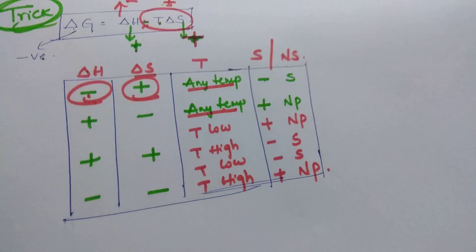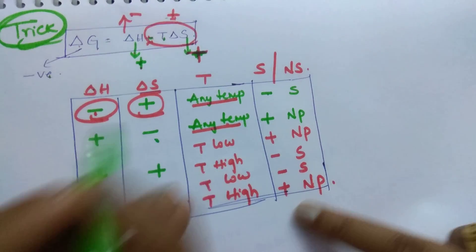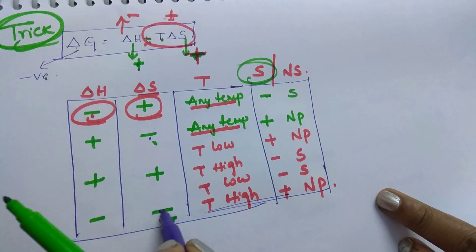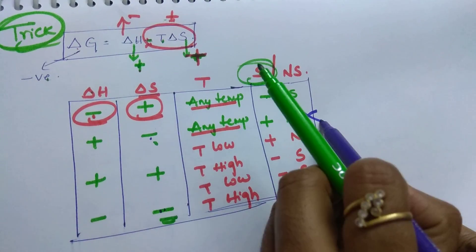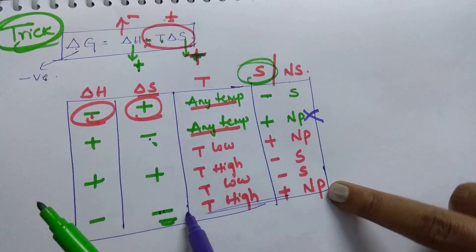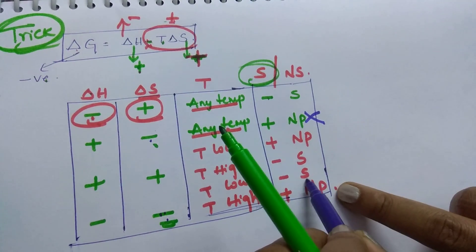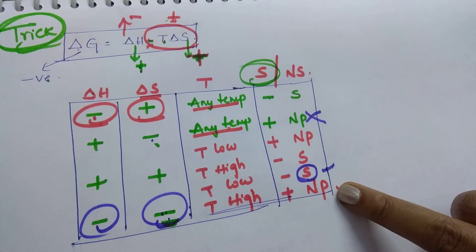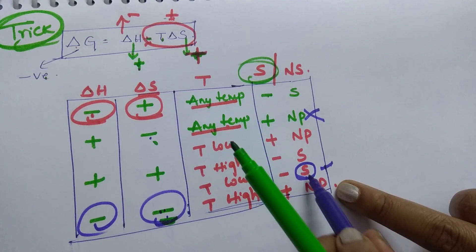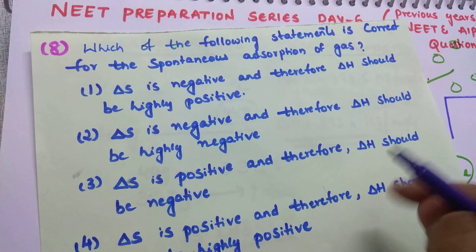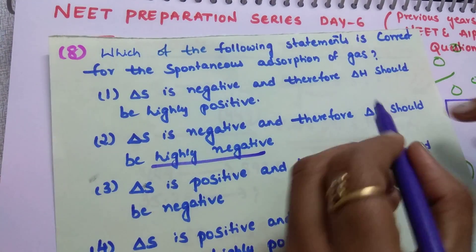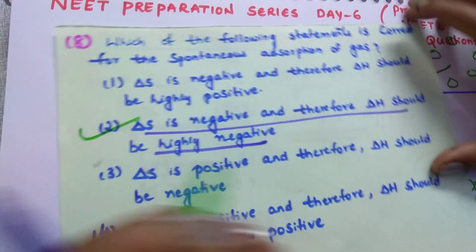In the previous class we discussed that if delta S is negative, what should be the other conditions for the reaction to be spontaneous? Only at low temperature is the reaction spontaneous in this condition. Both delta H and delta S should be negative — then only the reaction is spontaneous. So the option where delta S is negative and delta H is also negative is the correct answer.